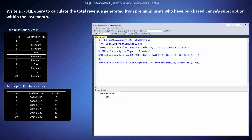To address this question, I recognized the need to combine data from both the UserSubscriptionDetails and SubscriptionPurchaseHistory tables. I used an INNER JOIN to match premium users with their purchase history based on the user ID. Then I applied filters to select only premium users who made purchases within the last month and calculated the total revenue by summing the purchase amounts, providing insight into revenue from premium subscriptions.